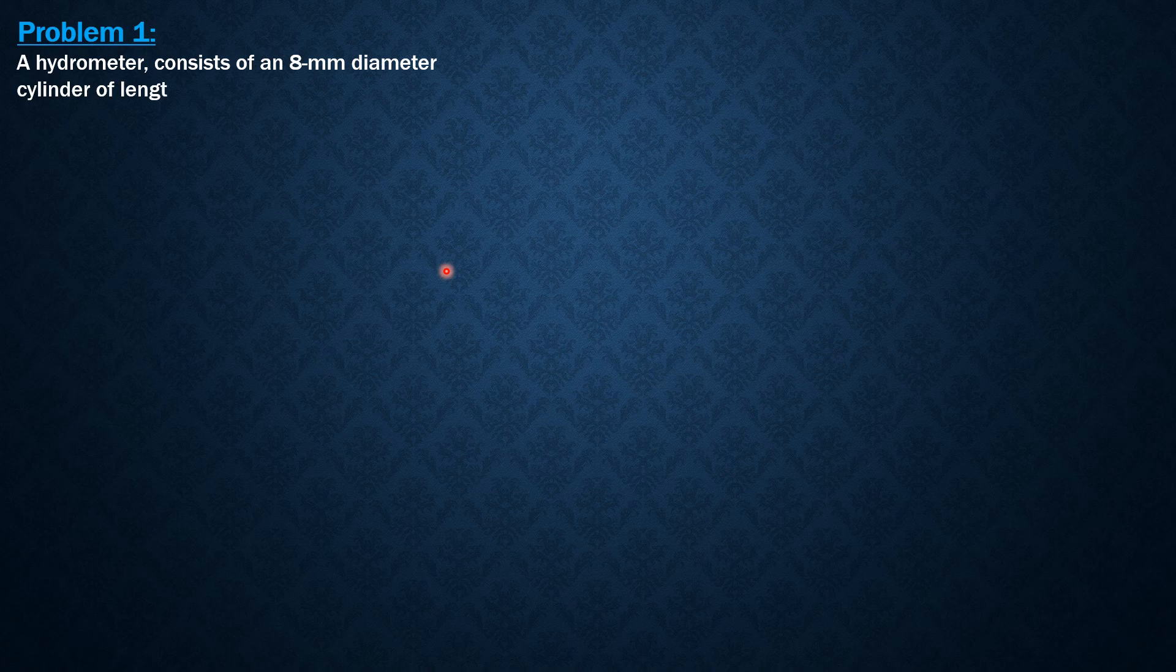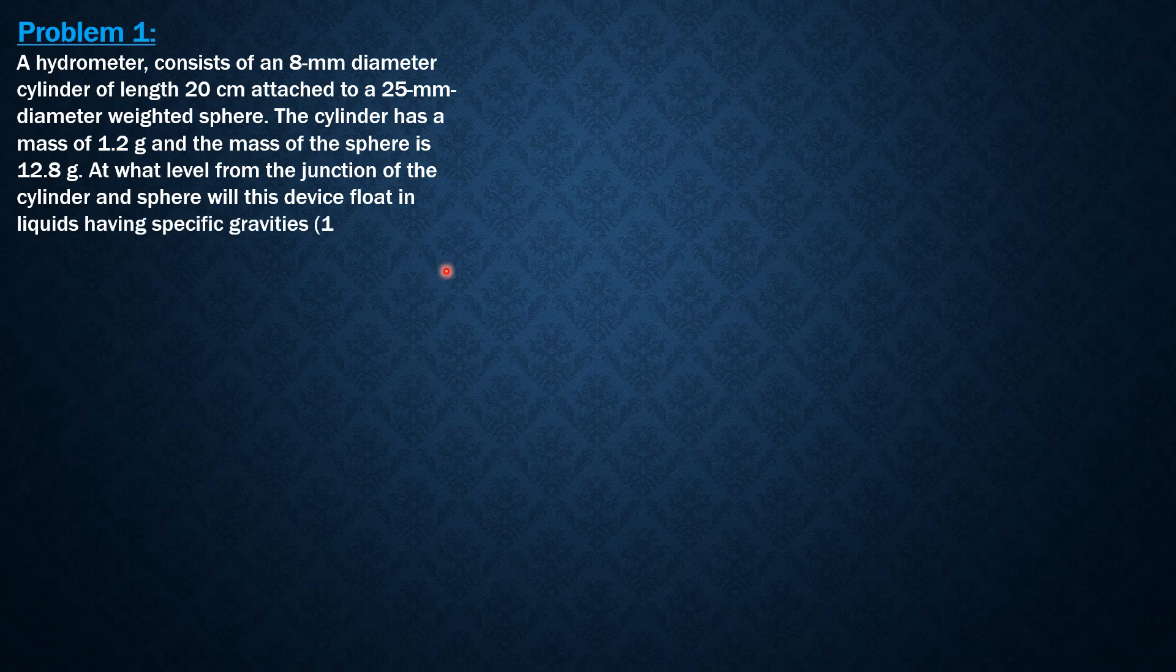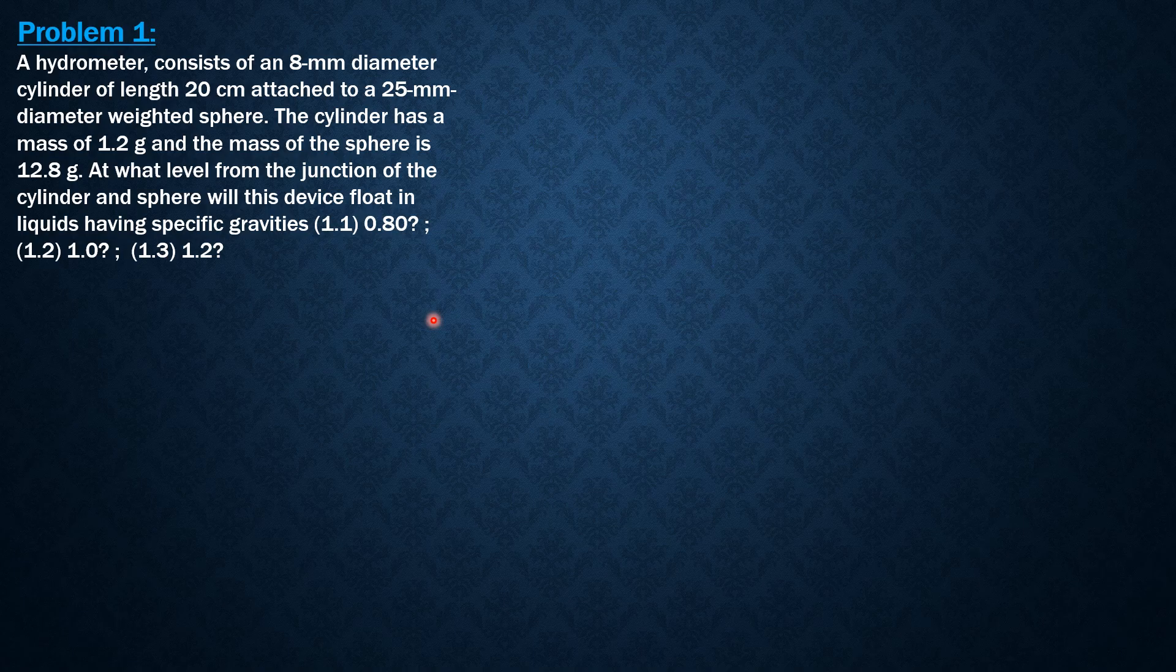A hydrometer consists of an 8 mm diameter cylinder of length 20 cm attached to a 25 mm diameter weighted sphere. The cylinder has a mass of 1.2 grams and the mass of the sphere is 12.8 grams. At what level from the junction of the cylinder and sphere will this device float in liquids having specific gravities of 0.8, 1.0, and 1.2?